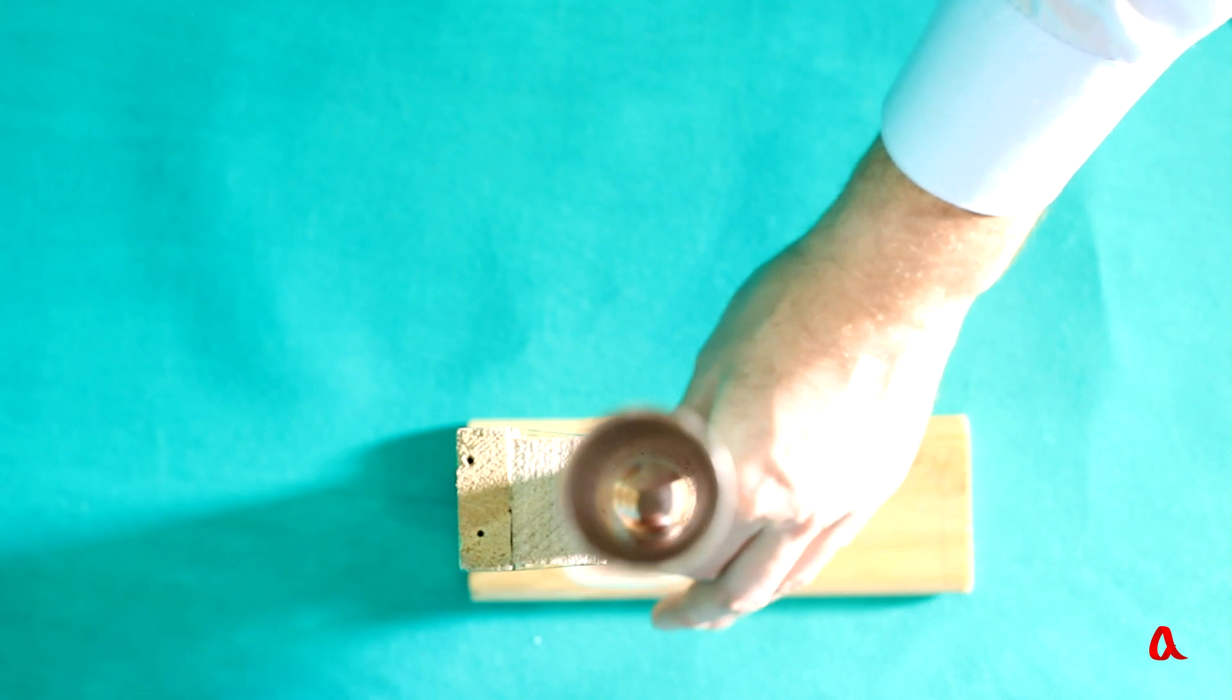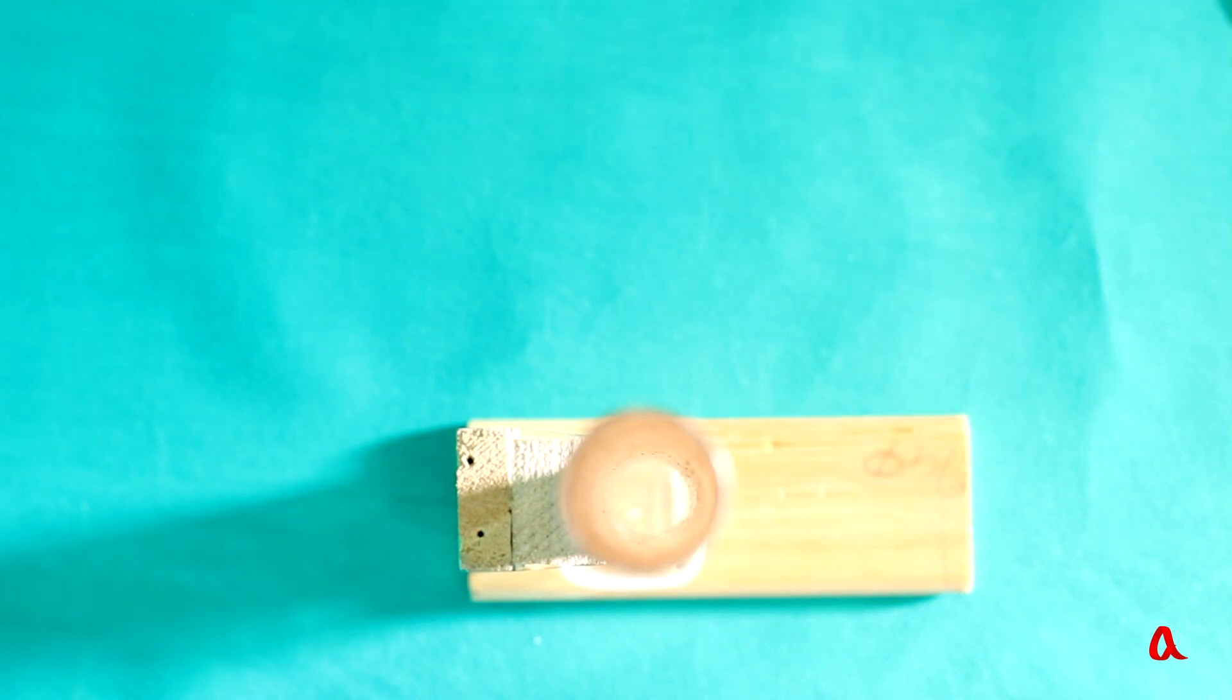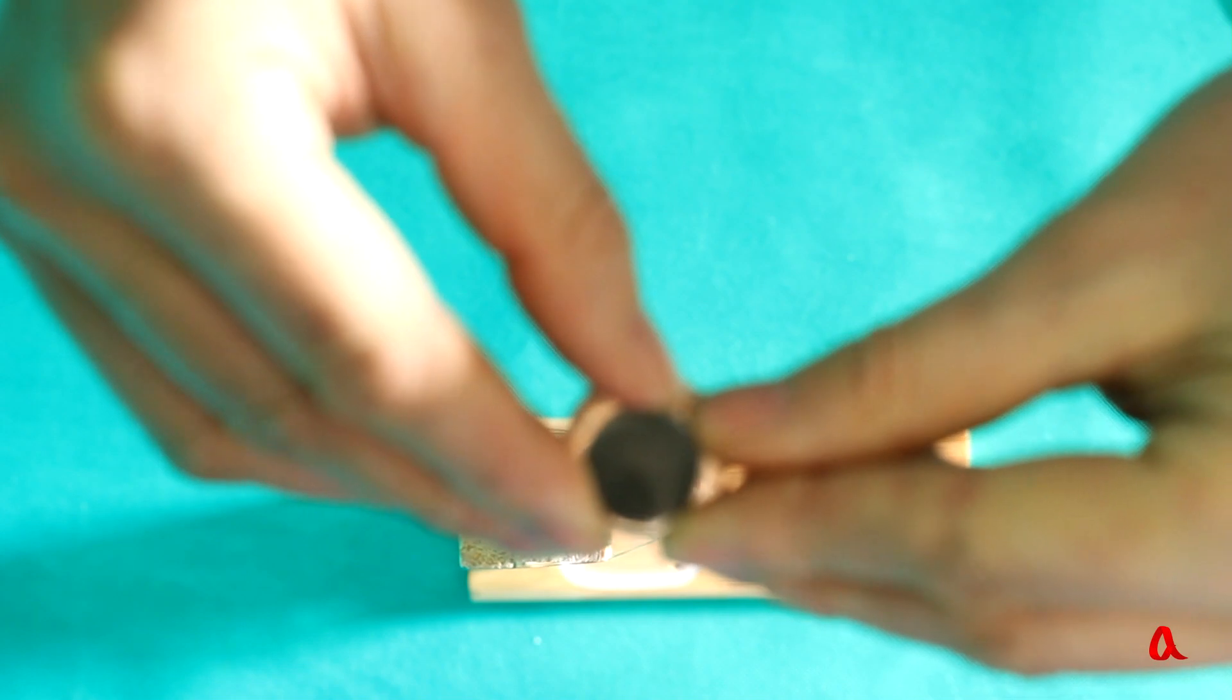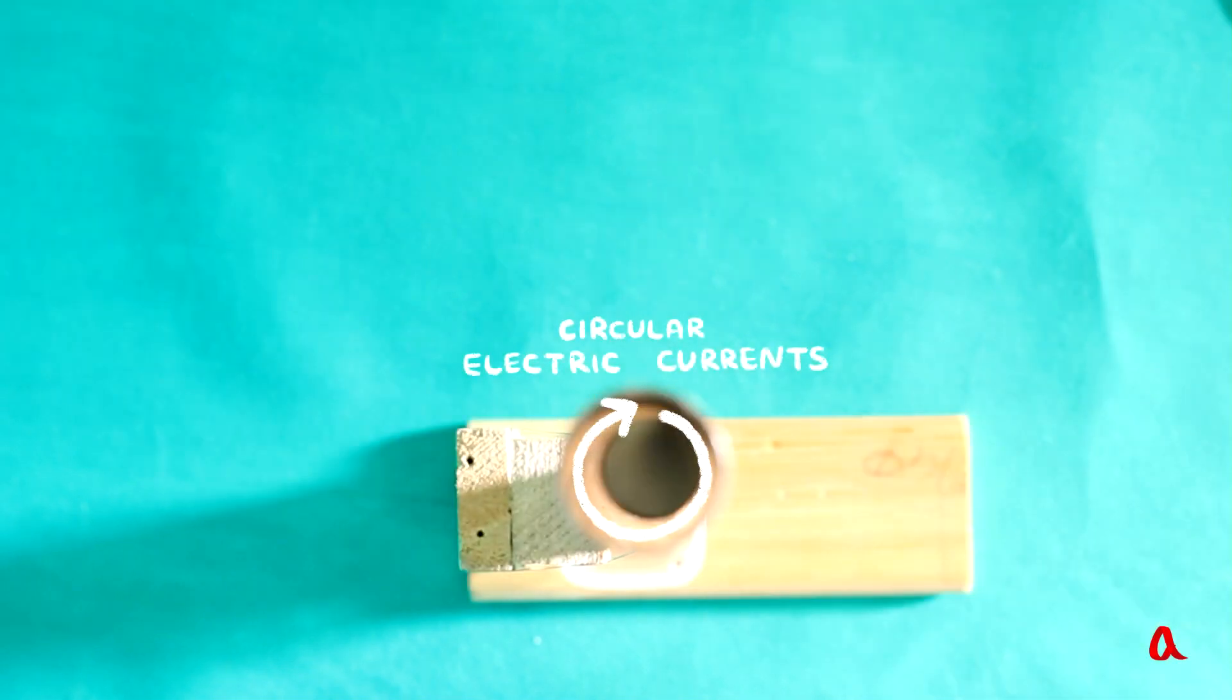The fact is that the moving magnet induces circular electric currents in the walls of the tube, which interact with it and slow it down. This device is called a magnetic brake.